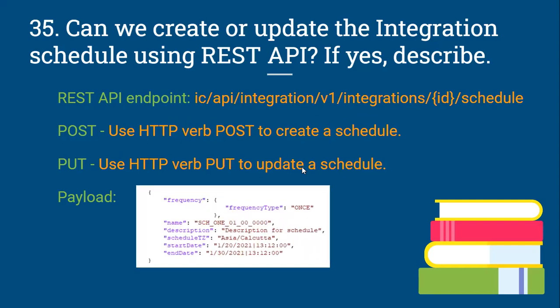An example REST API payload includes fields such as frequency type, name, description, schedule time zone, start date, and end date. By using REST API we can schedule an integration or update an existing schedule.